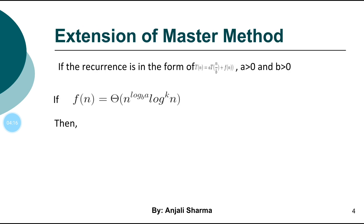We have different kinds of f(n). If our f(n) is not polynomial — say it is logarithmic — then in that particular case we use the extension of the master method, because master method cases 1, 2, 3 fail since the function is not polynomial.